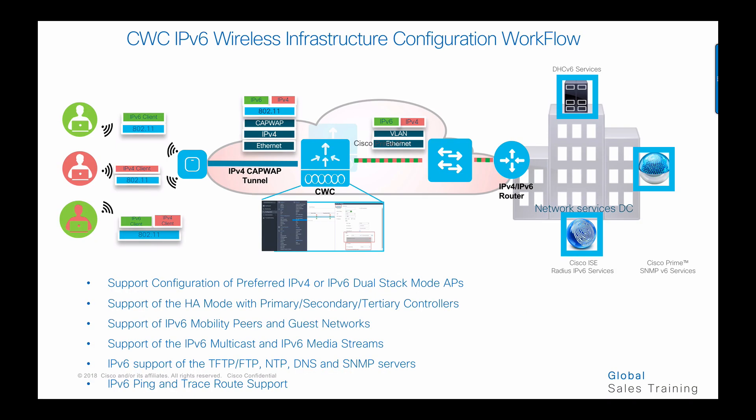The following steps cover configuring IPv6 wireless infrastructure configuration workflow on the Cisco Catalyst wireless controllers. In these steps, we configure support for preferred IPv4 or IPv6 dual stack mode APs, configure HA mode for primary, secondary, and tertiary controllers, configure IPv6 mobility pairs, and configure NTP, DNS, and SNMP servers. We'll also show how to use IPv6 ping and traceroute support on the CWC controllers.